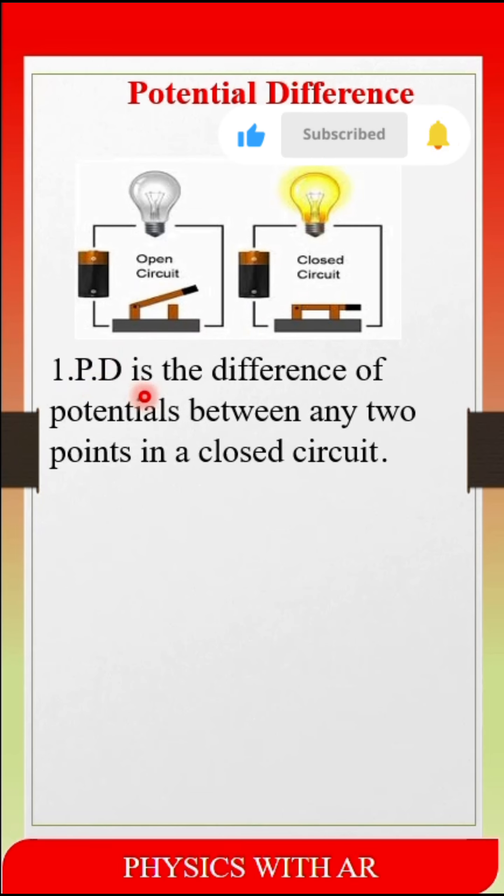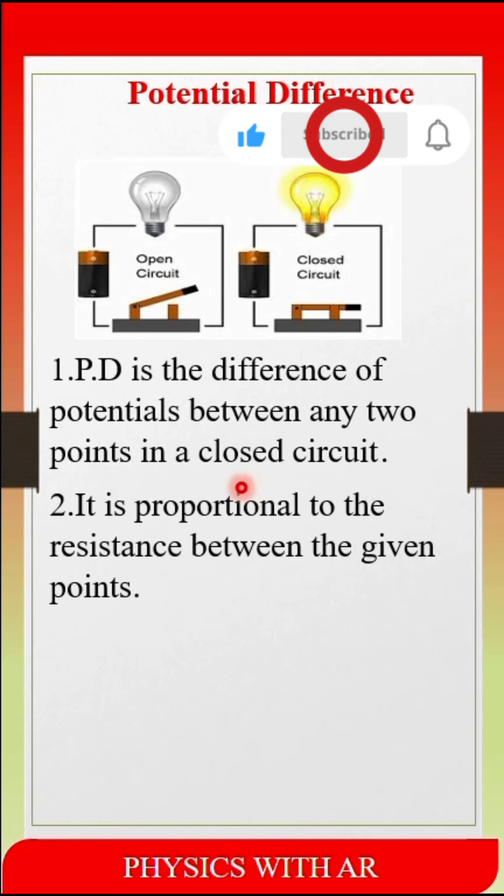PD is the difference of potentials between any two points in a closed circuit. While measuring the potential difference, we should have to consider in case of a closed circuit, it is proportional to the resistance between the given points.